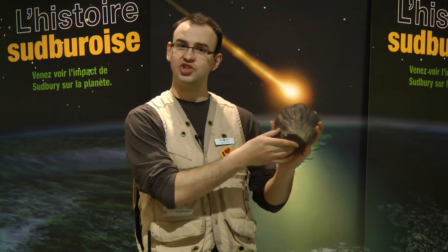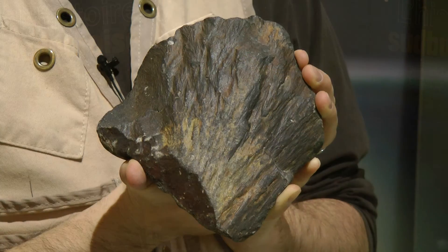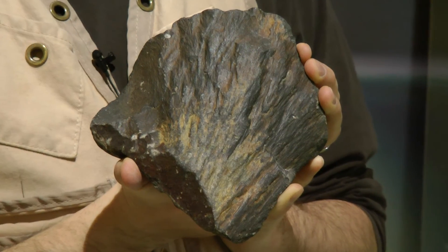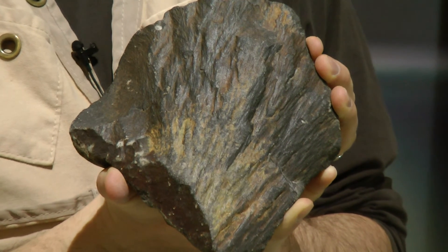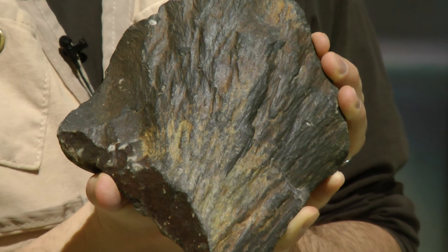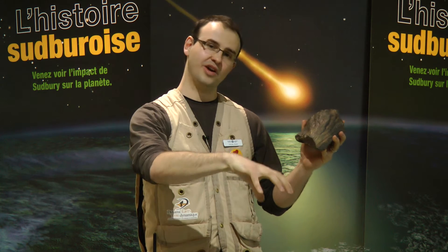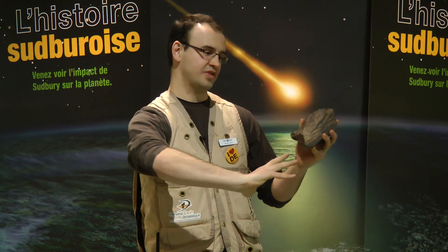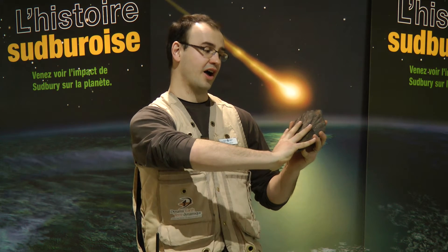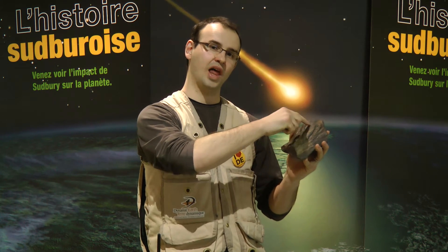So what kind of evidence do we have of this meteorite impact? Take this shatter cone for example. These kinds of rocks form commonly at meteorite craters. The violence of these meteorite crashes into the earth cause a lot of shockwaves traveling through the rock — the meteorite impact happening here, shockwaves traveling through the rock and orienting these minerals into lines.